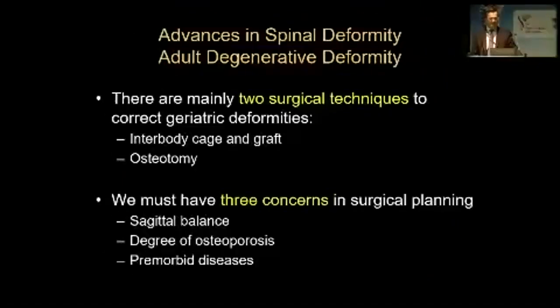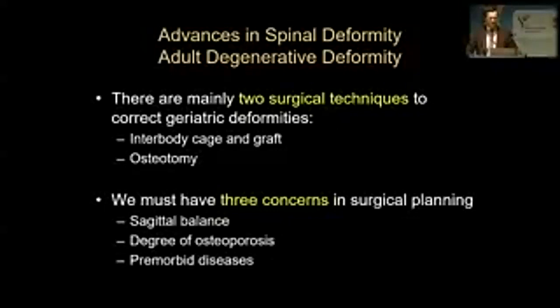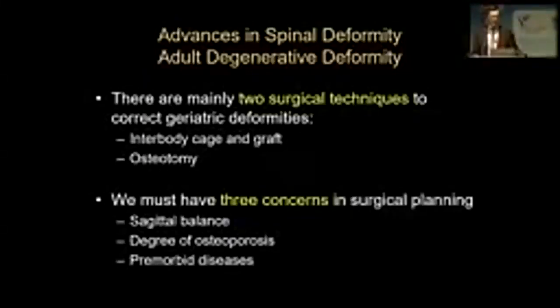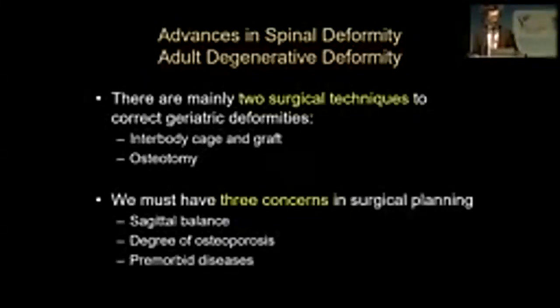There are mainly two surgical techniques to correct geriatric deformities: interbody cage and graft, or osteotomy. We must have three concerns: sagittal balance, degree of osteoporosis, and premorbid diseases. Thank you for listening.